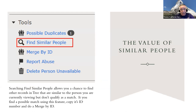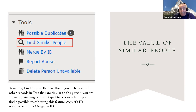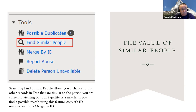FamilySearch is very strict about what qualifies as a 'possible duplicate,' so sometimes you know duplicates exist but the system won't show them. Use 'find similar people' to broaden the search — it will find people similar to the one you're viewing, including some that didn't qualify as possible duplicates, helping you identify merge candidates you'd otherwise miss.